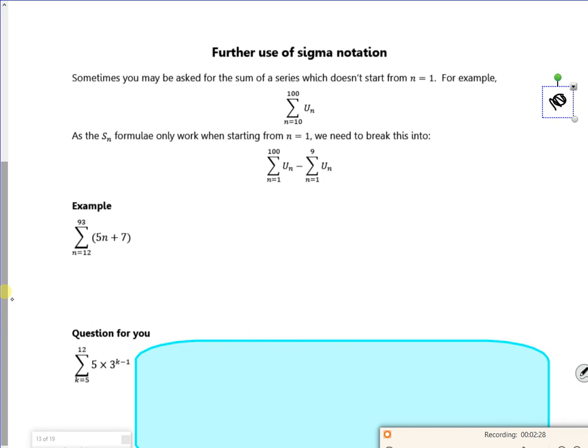Right, so. Oh yeah, further use. So this is this idea we were talking about before. Where like, from the 10th to the 100th, is the 100. So like, the sum of the first 100, and then minus the sum of the first 9 that we get wrong.